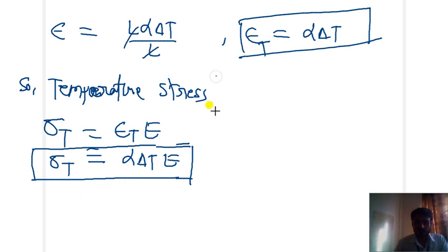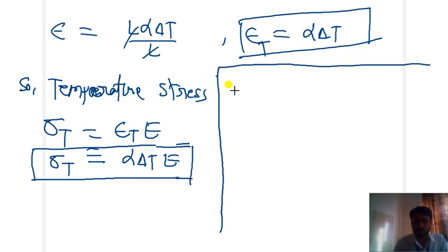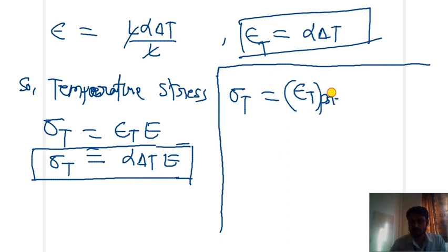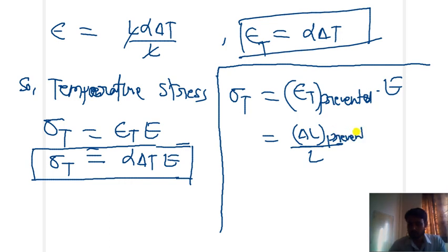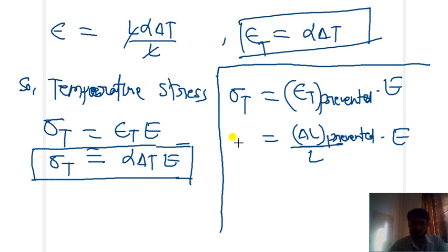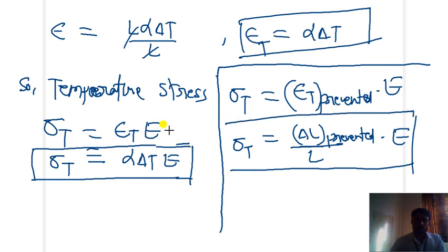At the time of finding thermal stress, we can express it as: thermal stress equals thermal strain prevented multiplied by modulus of elasticity. That term 'prevented' is very important. The thermal strain is delta L / L, and delta L prevented into E. How much change we have prevented — only due to that particular change in length will the thermal stress produce. So at the time of calculating thermal stress, we should be aware of the prevented change in length.